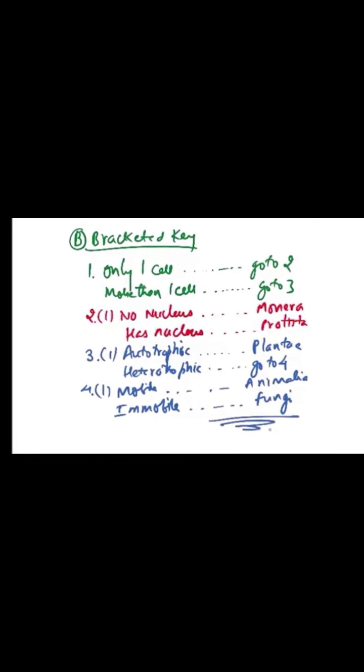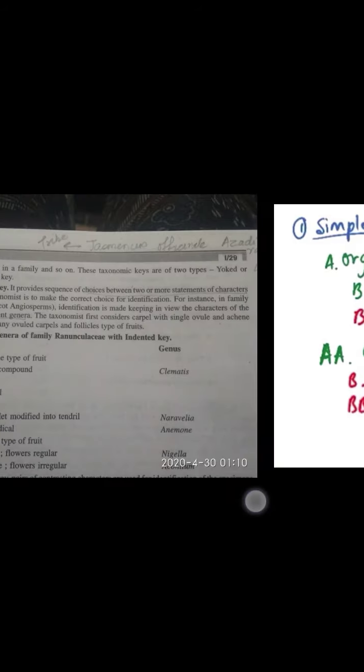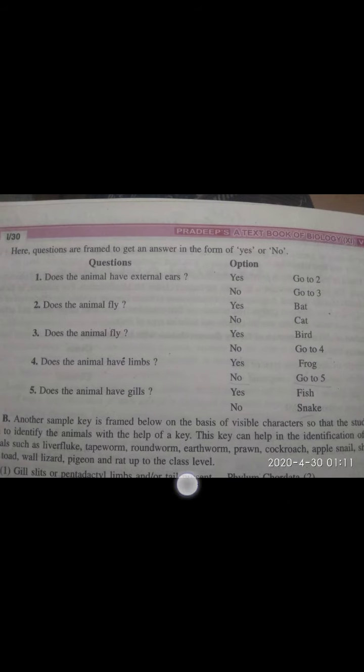We used this key to decide the five kingdoms. Now, if you find an animal and want to identify it using the bracketed key — note that you don't need to memorize these keys; they are written in your books. If you were a taxonomist, you would have these keys written with you.